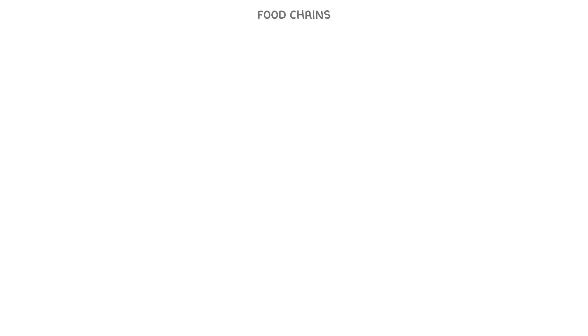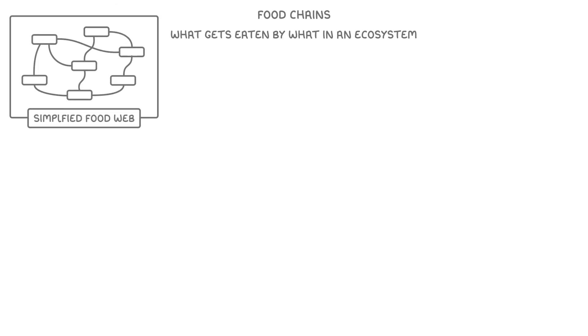All a food chain does is show what gets eaten by what in an ecosystem. It's basically a simplified version of a food web, because it doesn't show all of the interactions, just one chain of them.